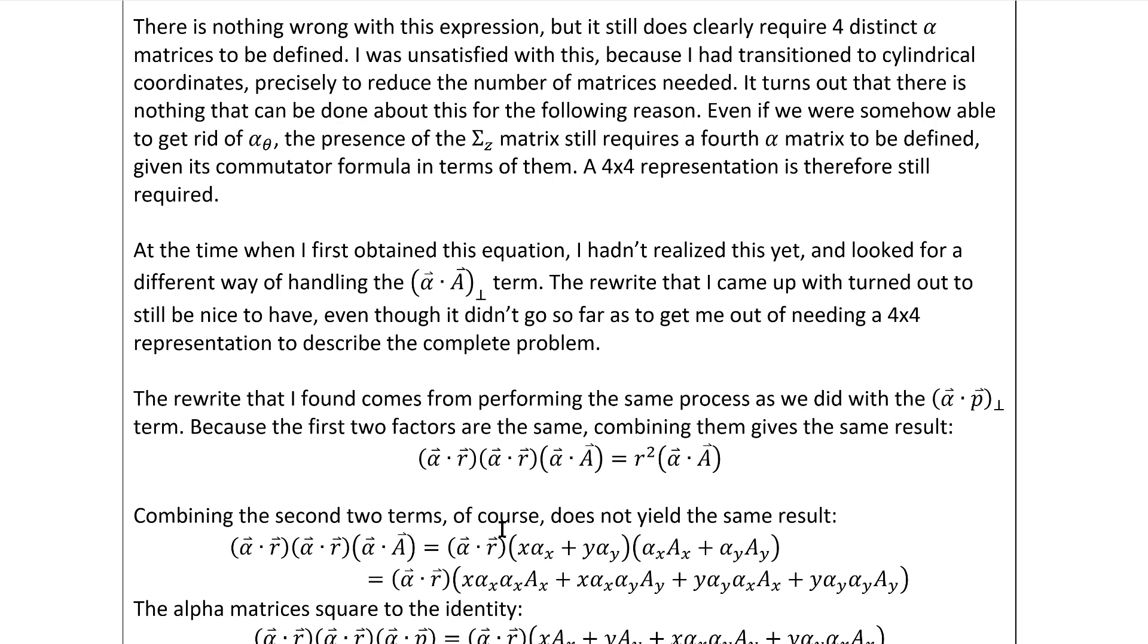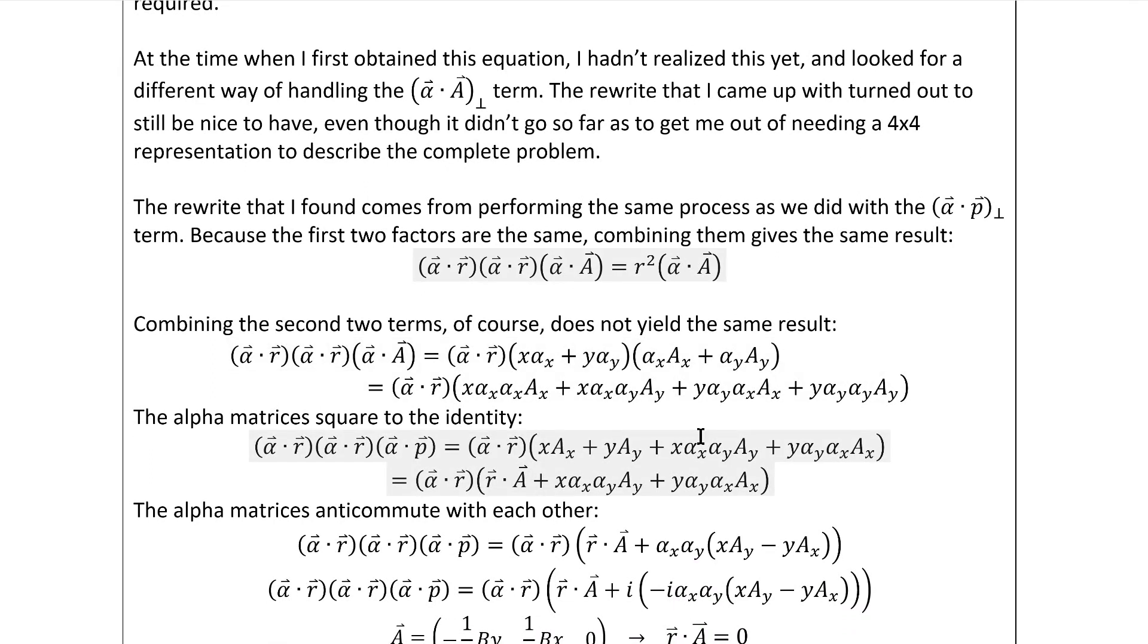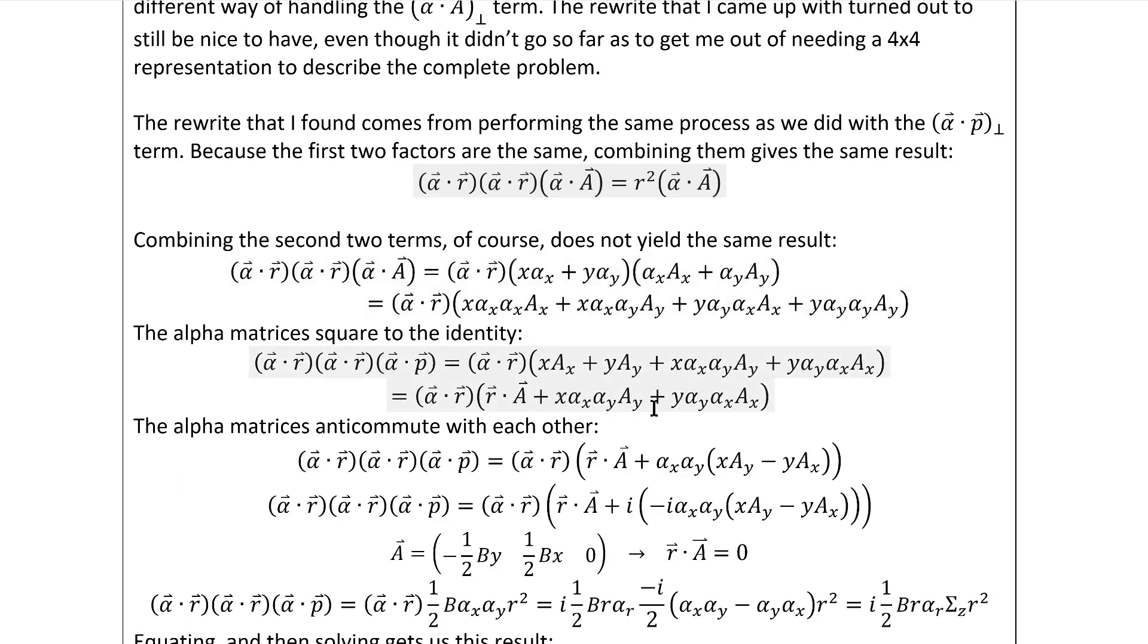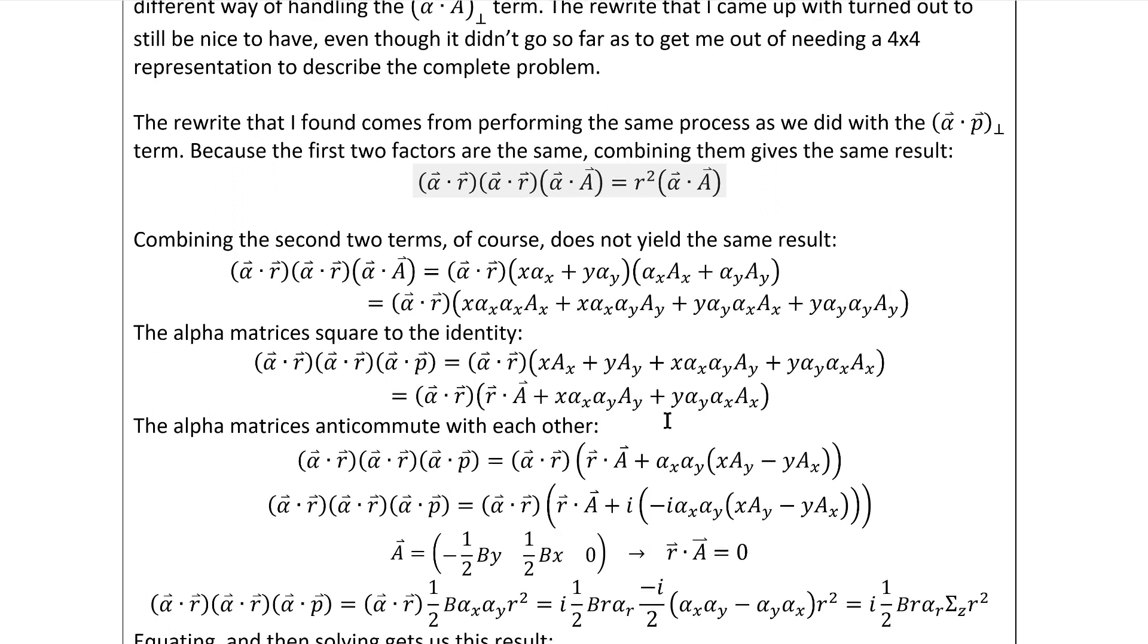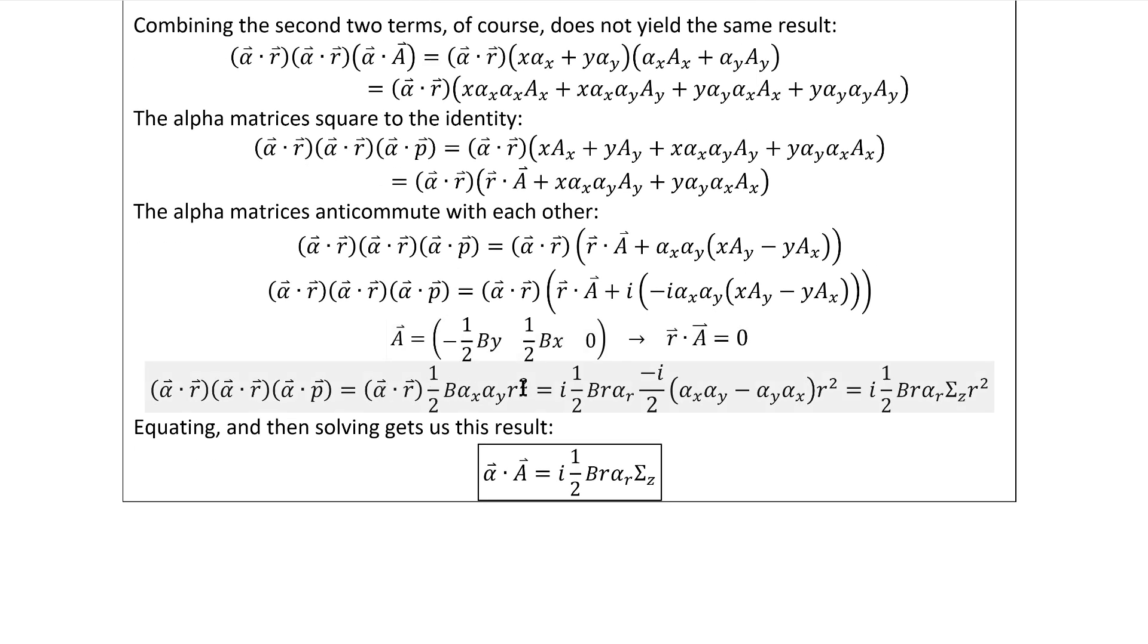And given its coolness, I did actually end up using that equation instead, even though it didn't provide anywhere near the benefit that I had hoped. Now the rewrite that I found comes from performing the same process that I did on the alpha dot p term. Because the first two factors in this triple product are the same as in that case, we can just skip straight to the answer. Combining the second two terms, of course, yields something different because we're dealing with a, not p. Multiplying things out and noticing that the alpha matrices square to one gets us to here. We can then use the fact that they anticommute to get us down to here. At this point, I noticed something that perhaps I should have noticed sooner, and that is that because of this minus sign, r dot a is actually just equal to zero, which makes it real simple. We just have this.